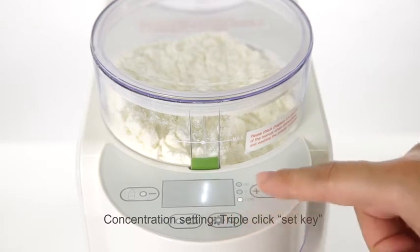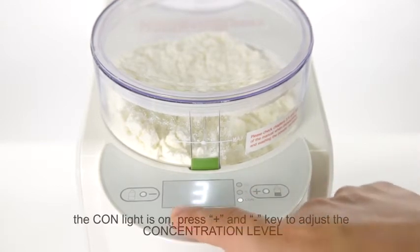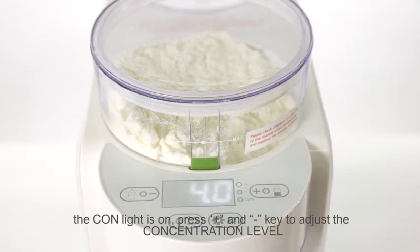Concentration setting: Triple click set key. The con light is on. Press plus and minus key to adjust the concentration level.